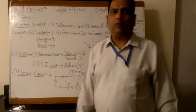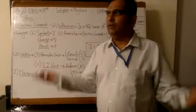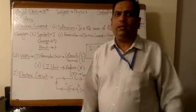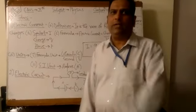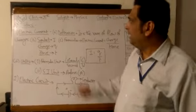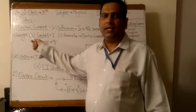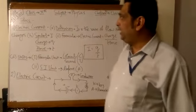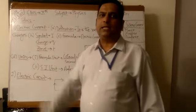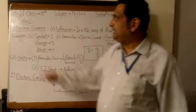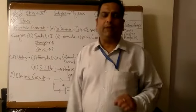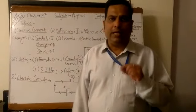First, the definition of electric current. Electric current is a very common thing, but we need to know the formal definition. Electric current is the rate of flow of charges, as I have written. You need to understand which type of charges are involved. The charges are basically the negative charges, that is, electrons.